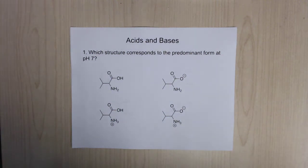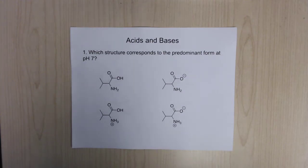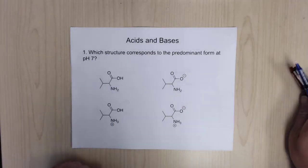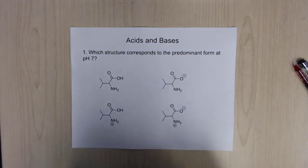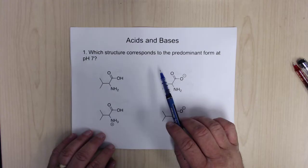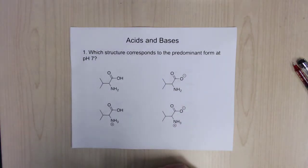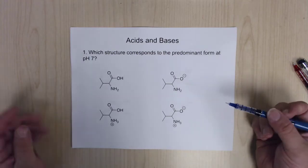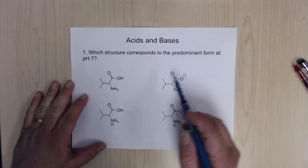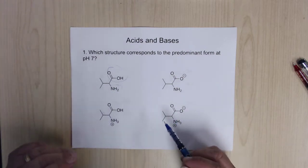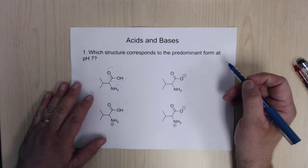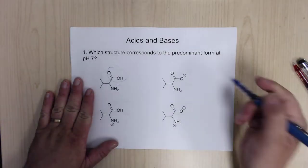Hello and welcome to the series on testing strategies for the ACS organic chemistry final. This lesson is going to be on acids and bases. We're going to talk about what makes things acidic, what makes things basic, and how to determine that. The question is: which structure is the predominant form at pH 7? This is typically done with amino acids, and you need to look at the carboxylic acids and the amines.